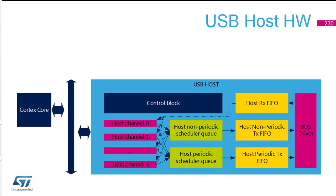Here we have the block schematic of the USB host as it's done with the OTG peripheral in STM32. Some blocks are similar to those inside the USB device. Again we have the core with the bus, the bus driver, and the FIFO. The FIFOs are divided differently in this application: one FIFO for RX receiving, and two additional FIFOs — one for non-periodic endpoints and one for periodic endpoints. The periodic endpoints are isochronous and interrupt endpoints.